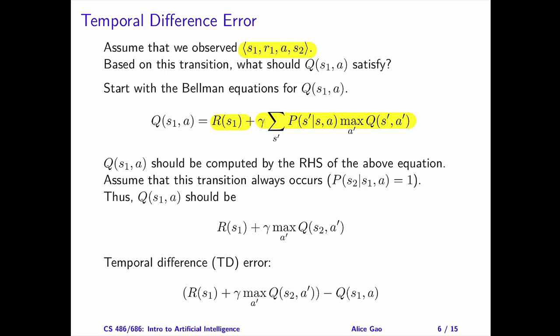Based on the Bellman equation, Q(S1, A) should be calculated by the expression on the right-hand side. There is one problem with this calculation. We don't have the transition probabilities. To solve this problem, let's make a simplifying assumption.